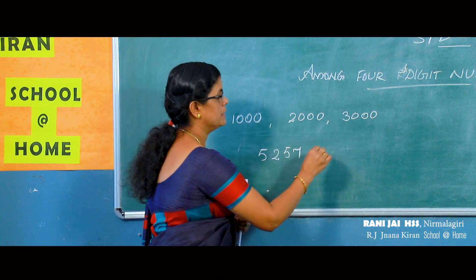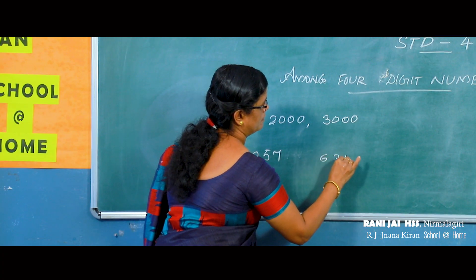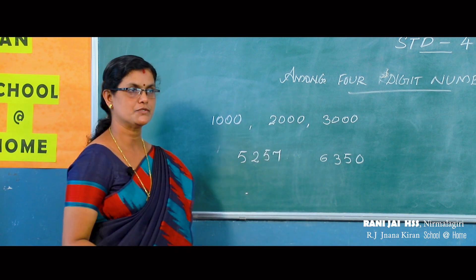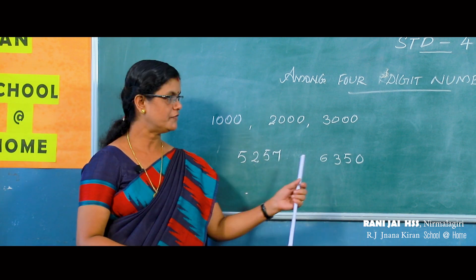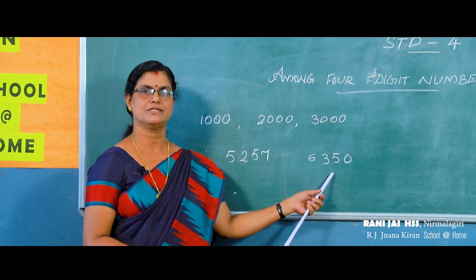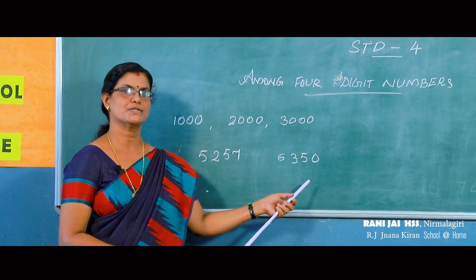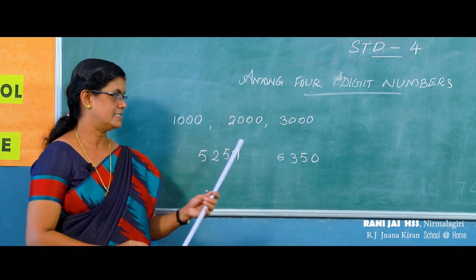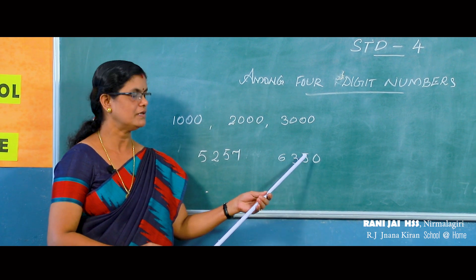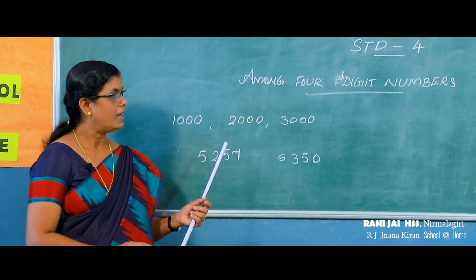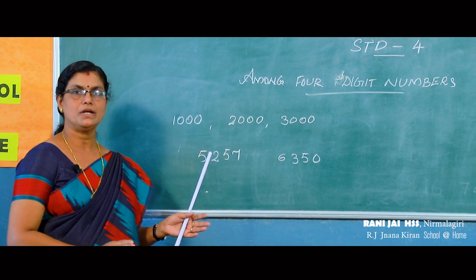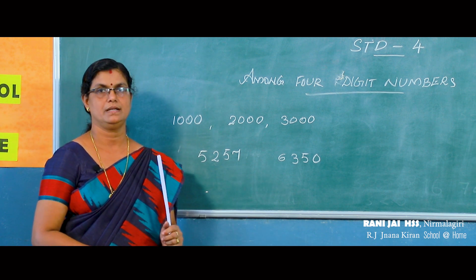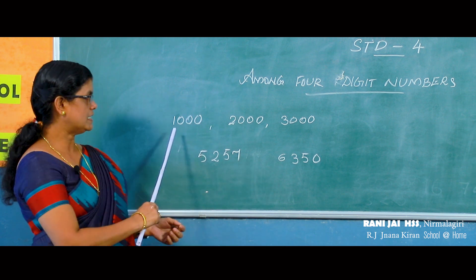Try to read the next number. How can you read this four-digit number? All of you try to read this — you can do it. Yes, very good — so many students have got the answer. The answer is 6350. I think all of you have learned how to read a four-digit number.